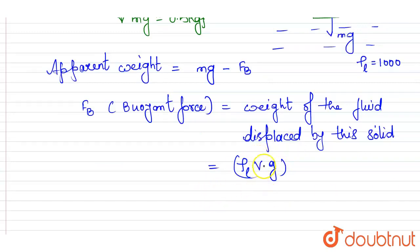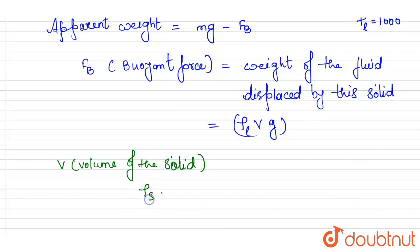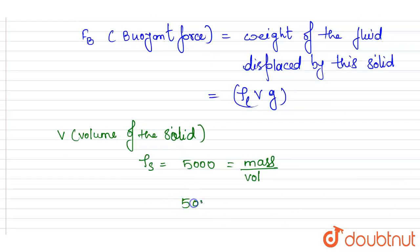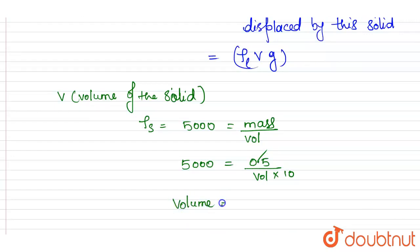So we need to find V to calculate this buoyancy force. The density of solid is given as 5000, and we know that density is equal to mass per unit volume. Mass is 0.5 kg, so 5000 equals 0.5 divided by volume. This decimal 0.5 is equal to 1 by 10, so volume equals 5 divided by 5000 into 10. The 5 gets cancelled, so volume equals 1 divided by 10 to the power 4 meter cube.